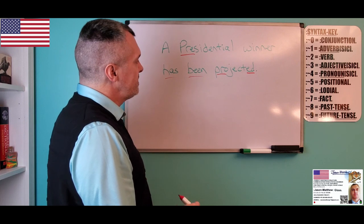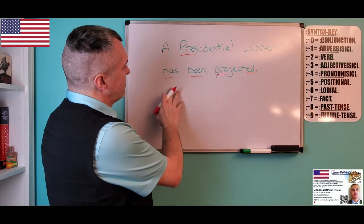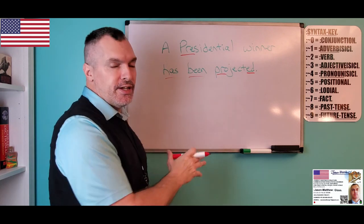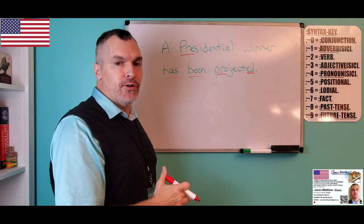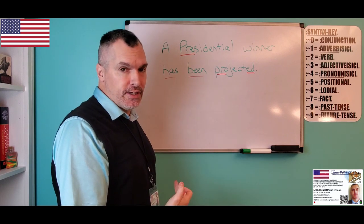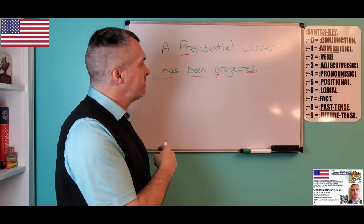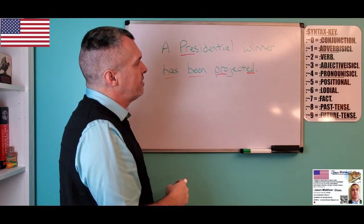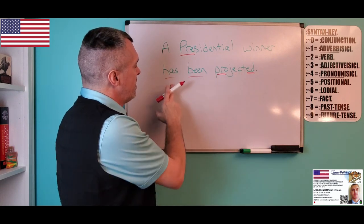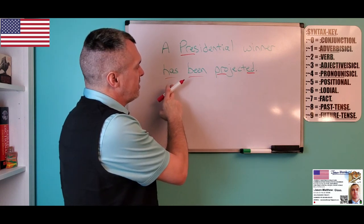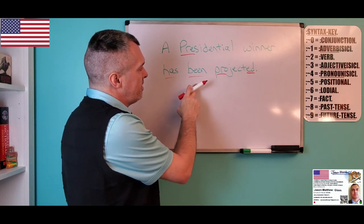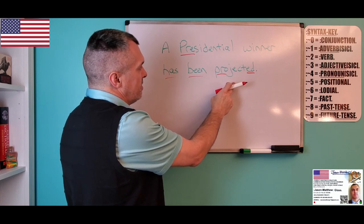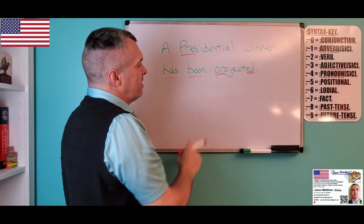When we syntax it, we look first at what are the tangible contract words and what are the non-tangible contract words. 'A' is non-tangible. 'Presidential' is tangible. 'Winner' is tangible. 'Has' is non-tangible. 'Been' is non-tangible. And 'projected' is tangible.